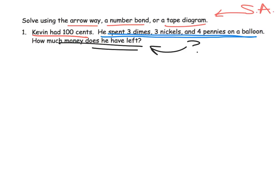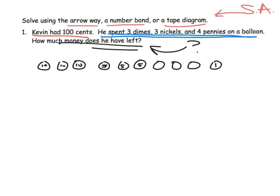Let's first figure out how much money he spent. He spent three dimes, three nickels, and four pennies. We know three dimes is 30 cents, and two more nickels makes 40 cents. We don't have enough to make 50 cents, so that's 10, 20, 30, 40, and then 45, 46, 47, 48, 49. So he spent 49 cents.